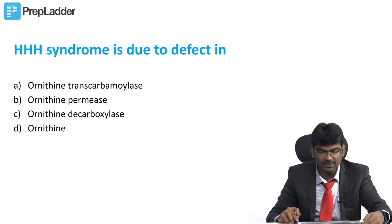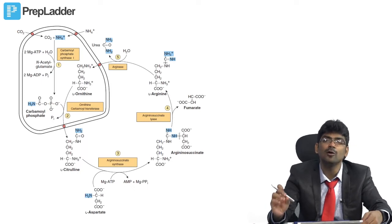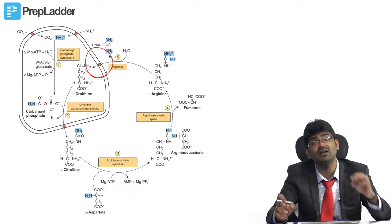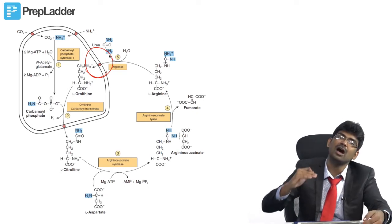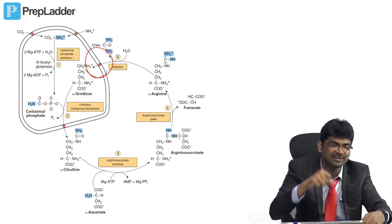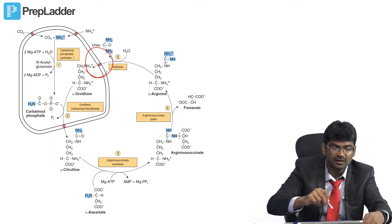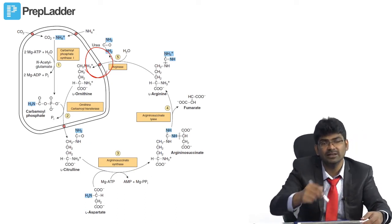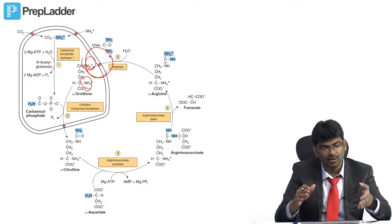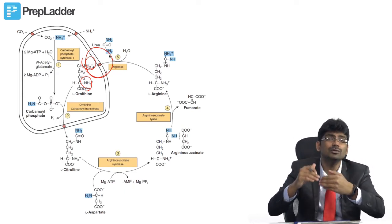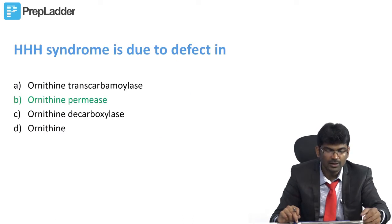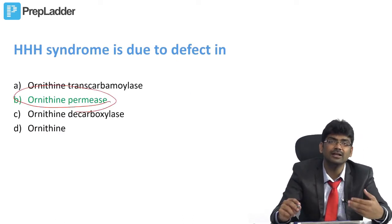Triple H syndrome is due to a defect in the transporter for ornithine — ornithine permease. Triple H stands for hyperammonemia, hyperornithinemia, and homocitrullinemia. Because ornithine cannot enter the mitochondria, hyperornithinemia results. The urea cycle is defective causing hyperammonemia. Homocitrullinemia happens because without ornithine, carbamyl phosphate reacts with lysine — also a basic amino acid with an epsilon amino group — which resembles ornithine, producing homocitrulline.